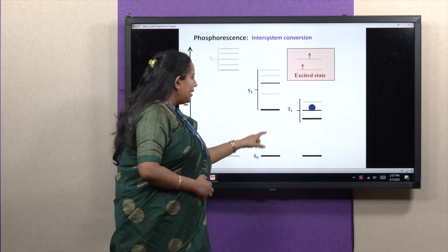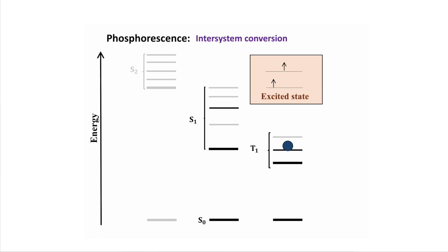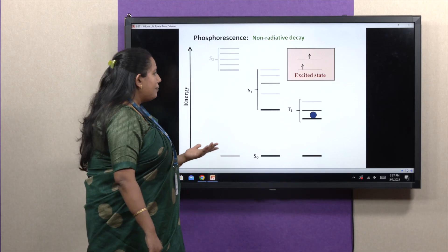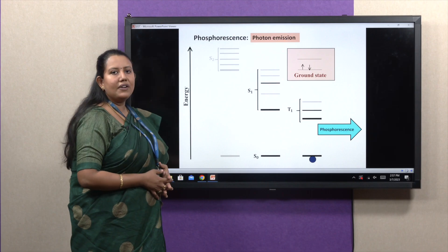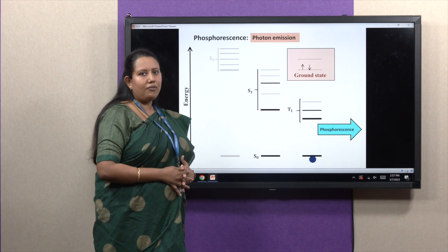From this triplet state, if molecules come to the lowest vibrational level by various non-radiative decay channels like vibrational relaxation, and from this lowest vibrational level, if it comes back to the ground state with radiative pathway, then this phenomenon is termed as phosphorescence.